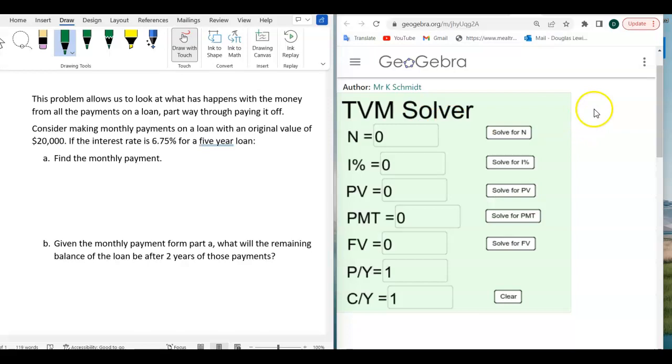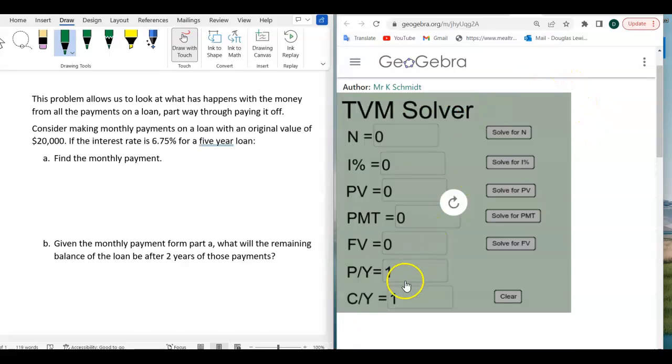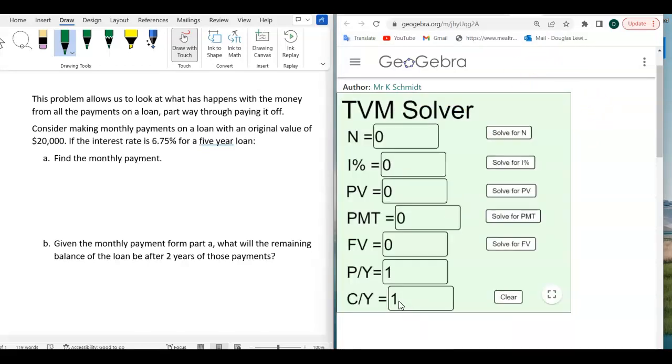So we'll go to our TVM solver, and the first thing it says is that this is monthly, so I'm going to make the compoundings and payments per year 12. And this is going to be 12 times, and how many years is it? It's for five years, so 12 times 5, that should be 60 years.